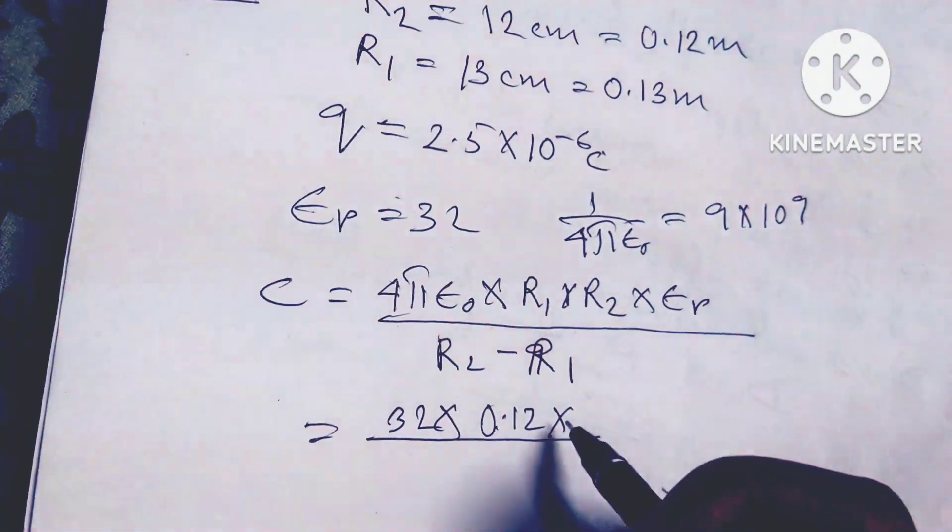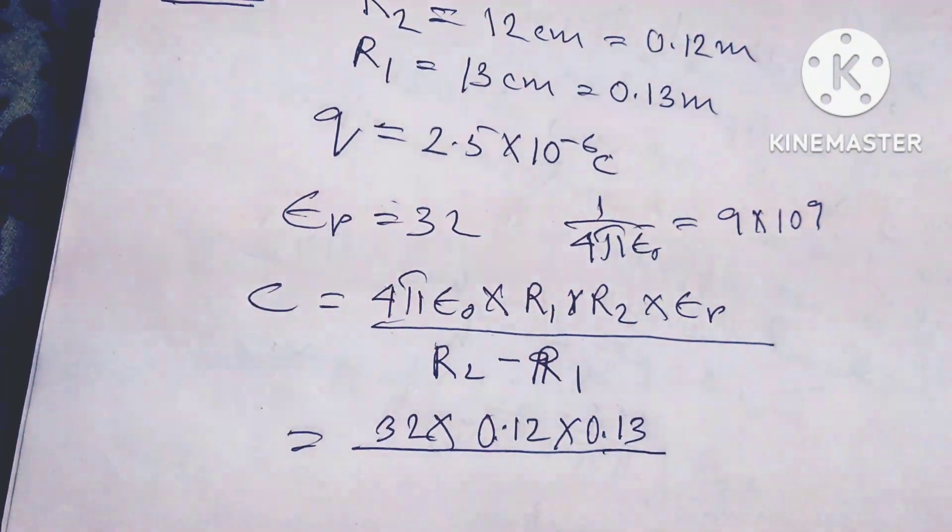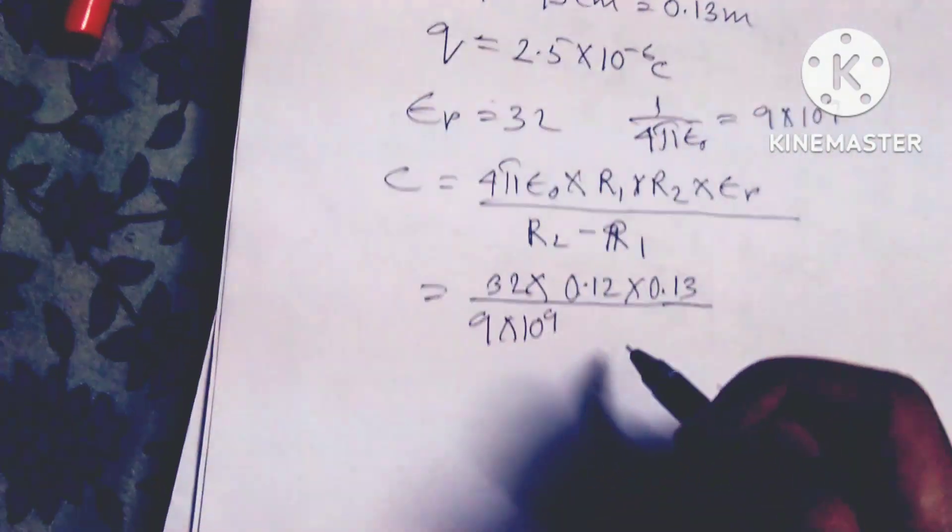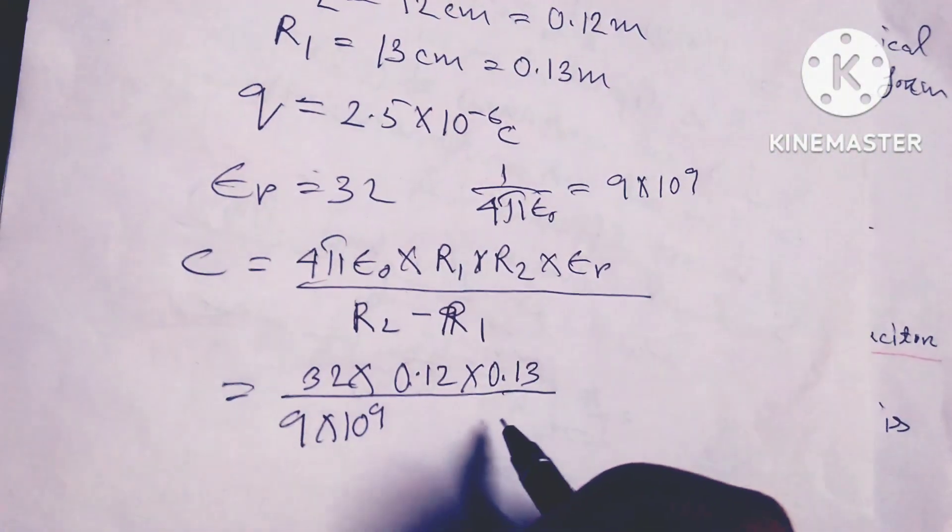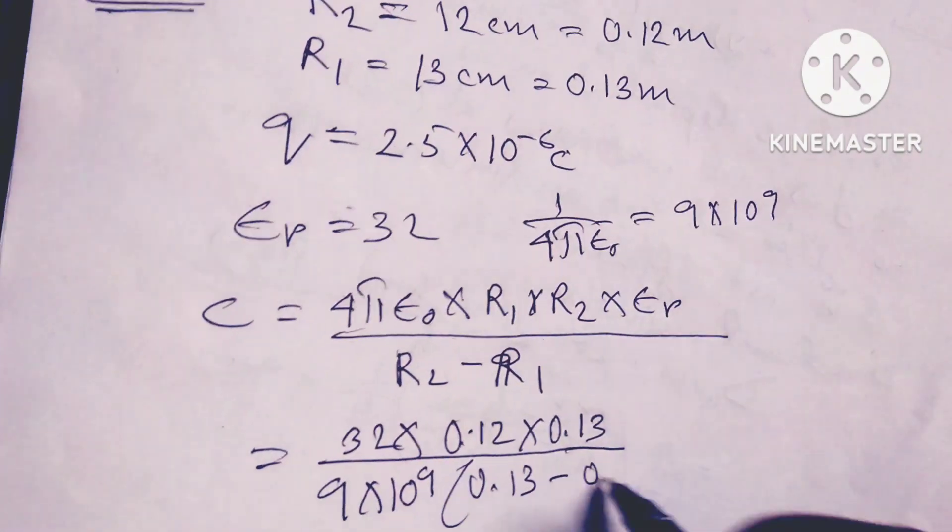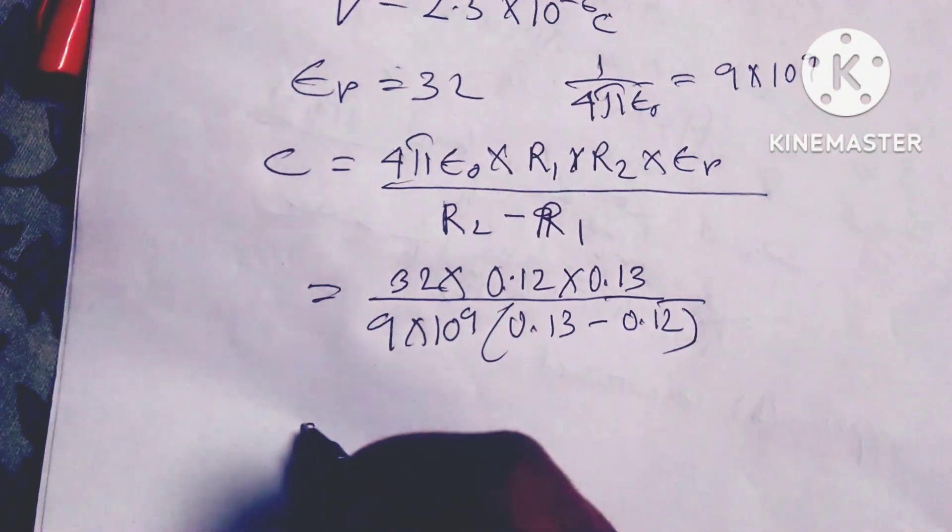9 × 10⁹ × (0.13 - 0.12). So that's 32 × 0.12 × 0.13 over 9 × 10⁹ × 0.01.